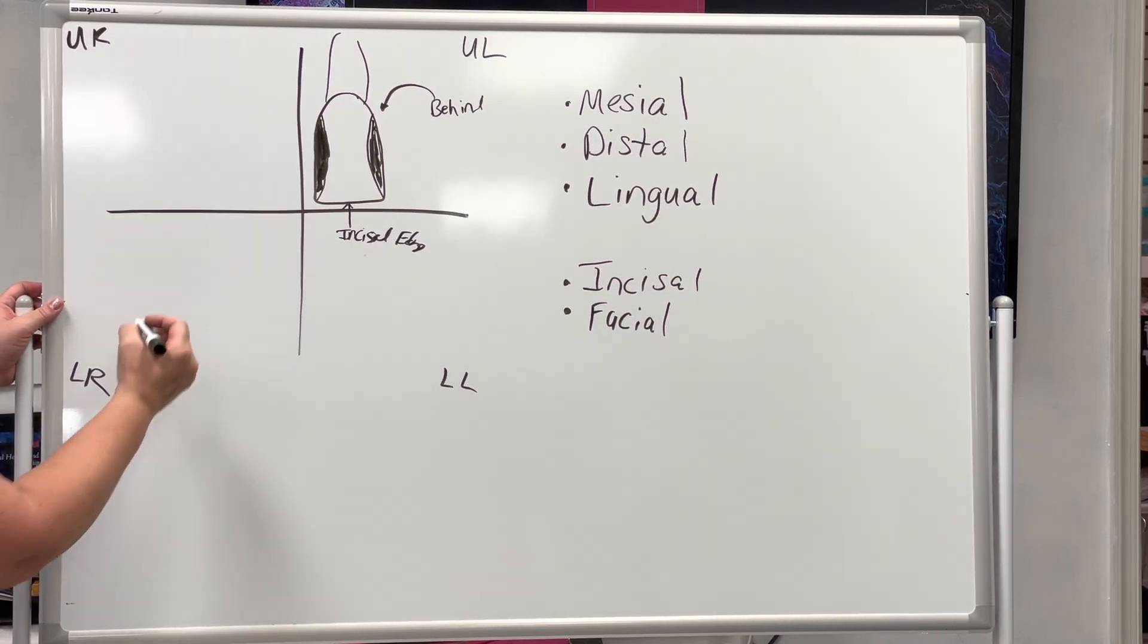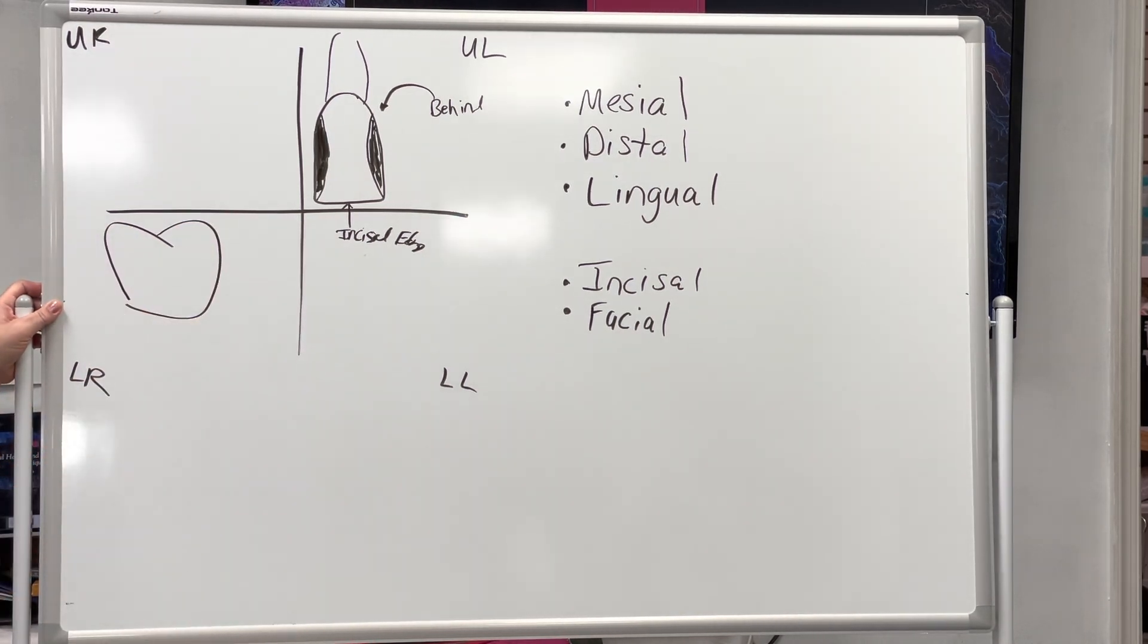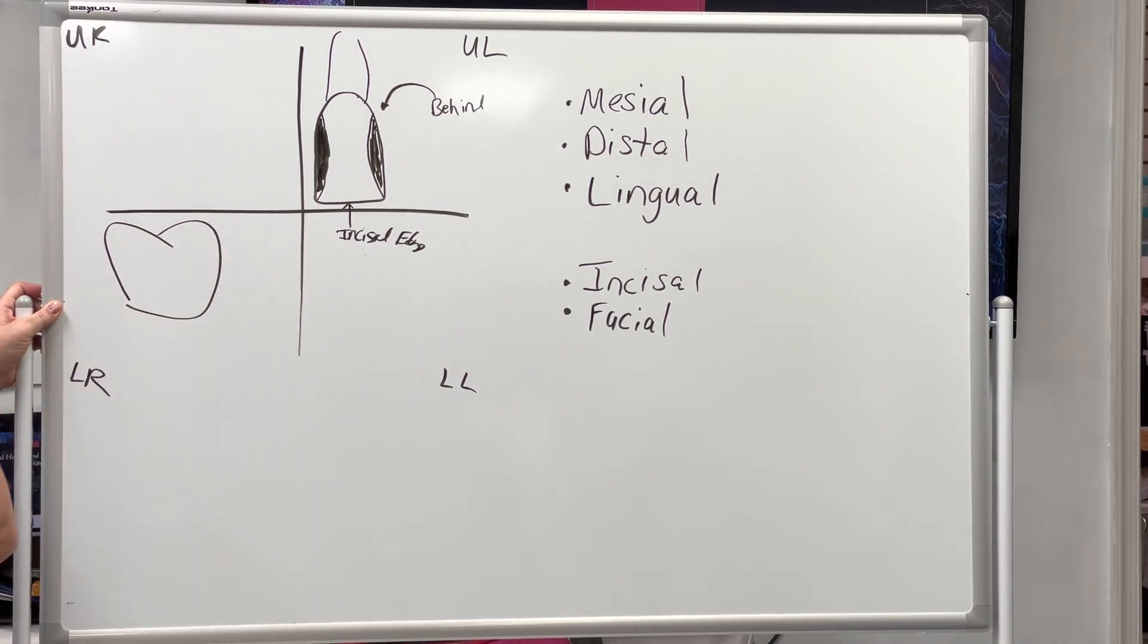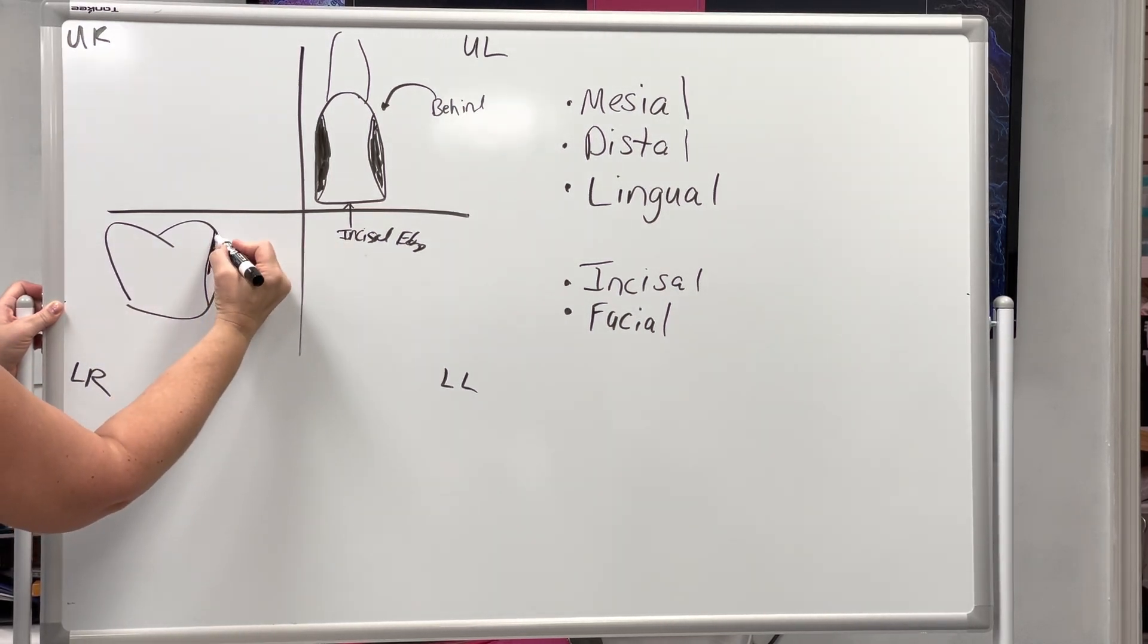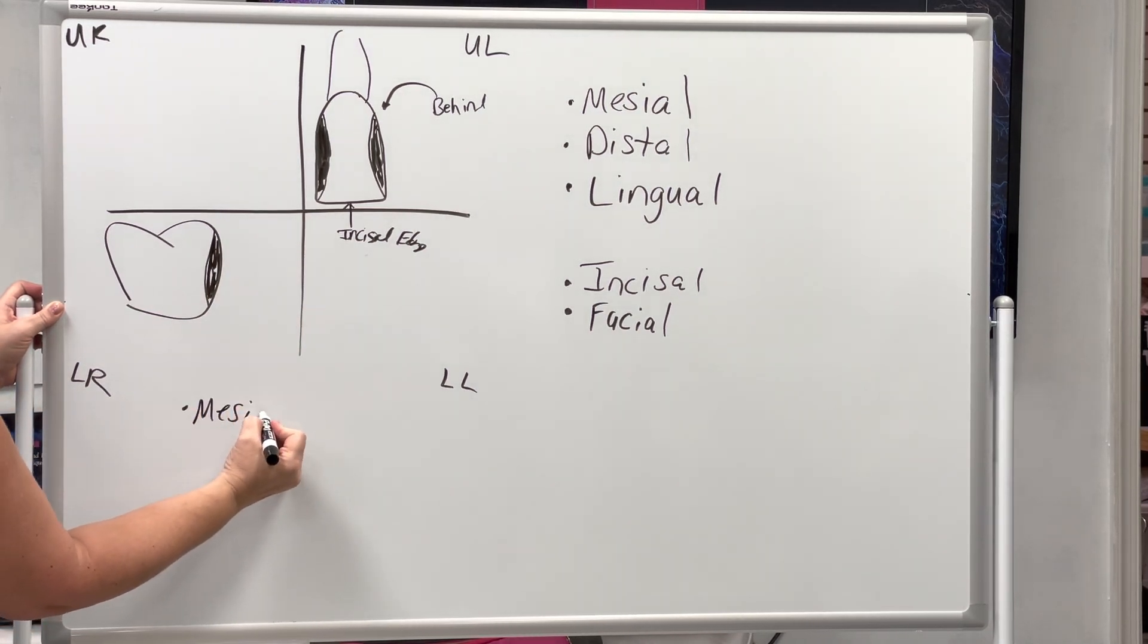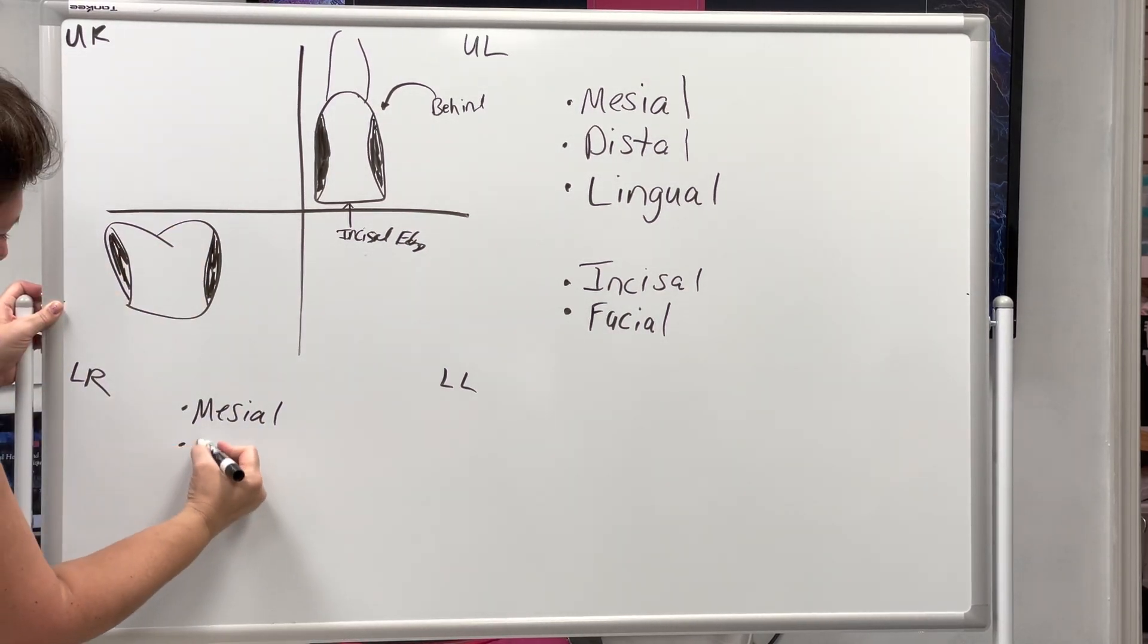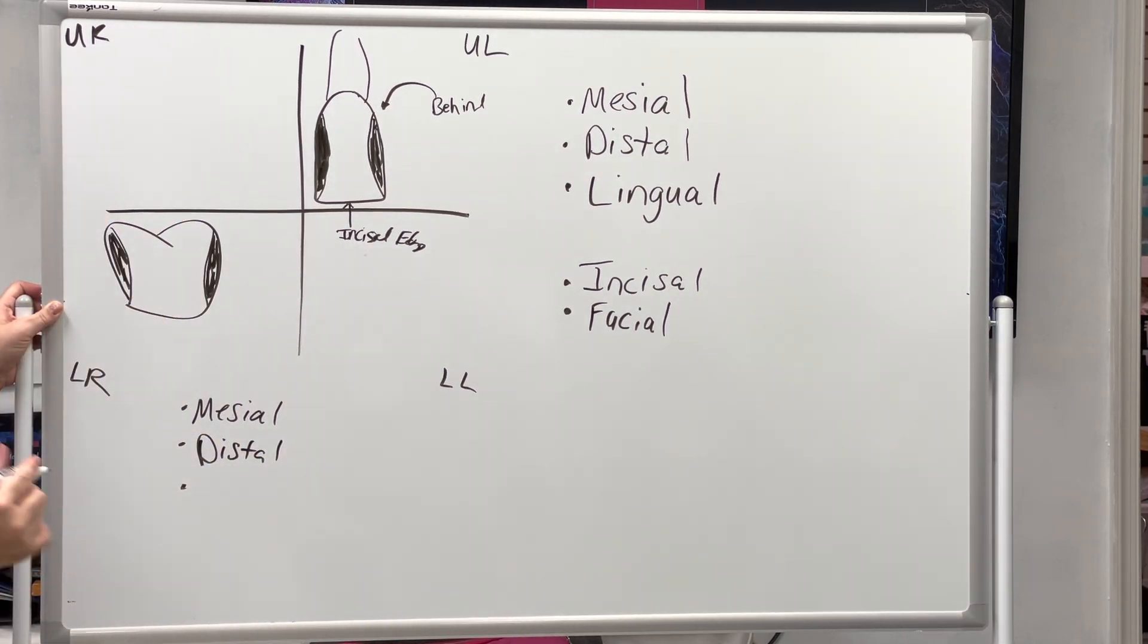Now what if we're over here and that's your first molar, we'll say. Which first molar is it? Lower right. Lower right first molar. So for this one, this part of the tooth is closest to the midline. So it would be what? The mesial. So we have the mesial, the distal.